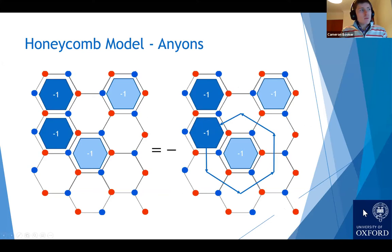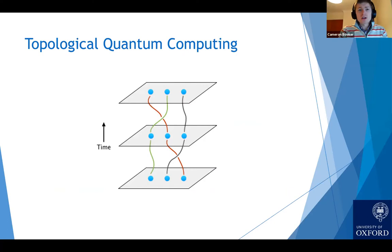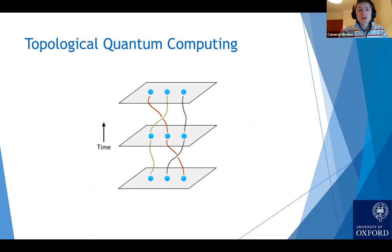A hexagon with value minus one is called a vortex. These vortices can act as quasi-particles called anyons — particles that, when you swap them around, don't give you back the same state. If we take pairs of vortices and braid one around the other, the overall quantum state picks up a phase; the state knows the vortices have moved around each other. These anyons are the foundation of topological quantum computers, where braids and knots store quantum information.